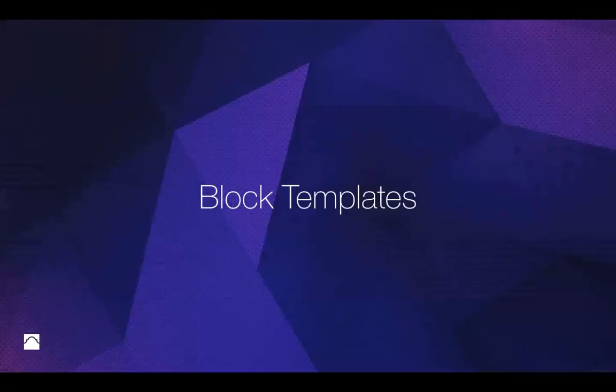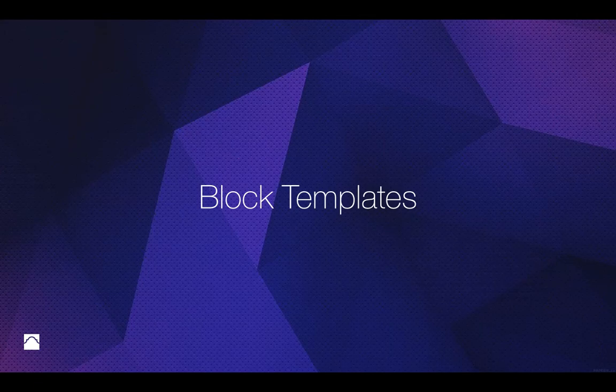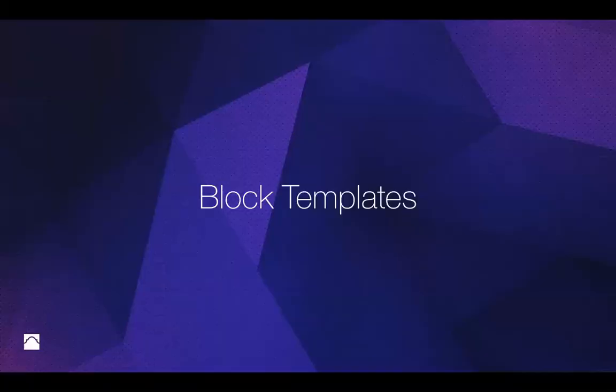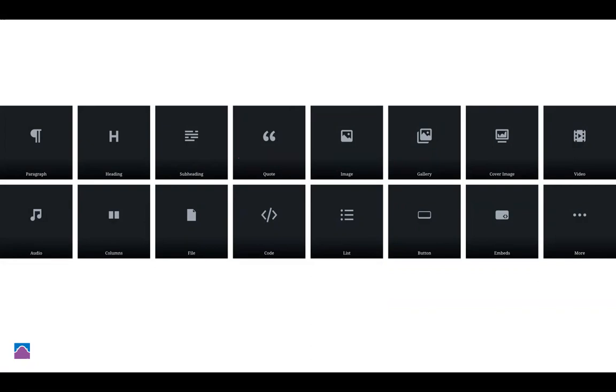You can also create block templates — this is getting more advanced. This gives developers the ability to define and protect content structures, and also gives users the ability to directly edit the information. So if you have a project needing a very specific type of content, you can create your own content type. When users go to select a content type, they would see your custom type with a custom icon and name. For example, you could create a 'book' content type with fields for title, author, image, and description.